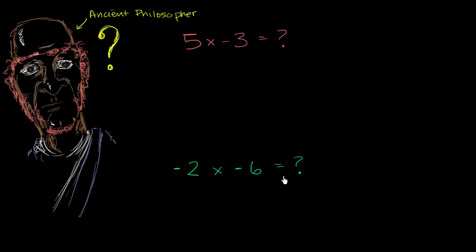What you do know, because you are a mathematician, is that however you define this, it should hopefully be consistent with all of the other properties of mathematics that you already know — and preferably all of the other properties of multiplication. That would make you feel comfortable that you are getting this right. Later we can think about other ways to get the intuition for why this makes sense.